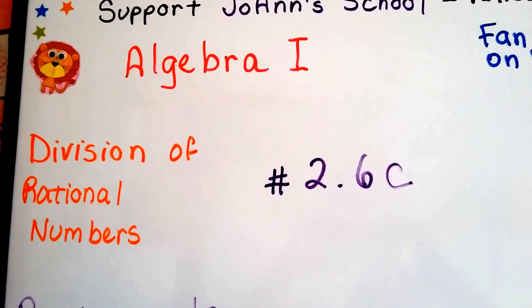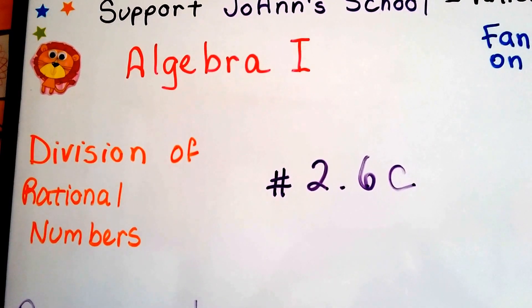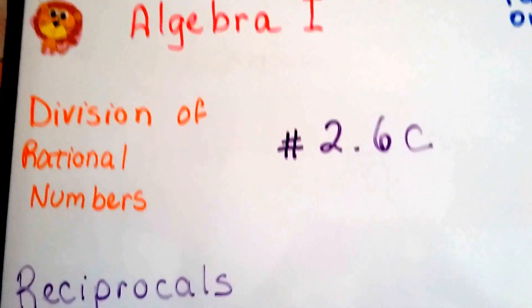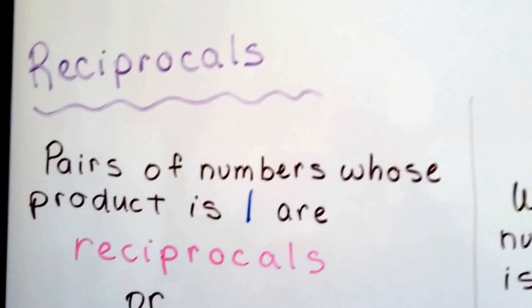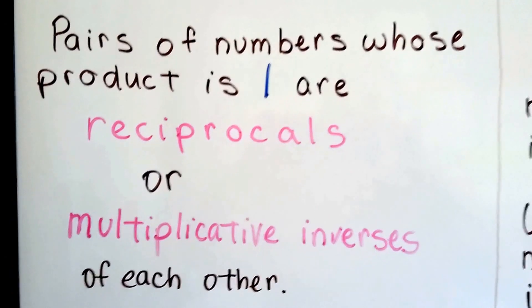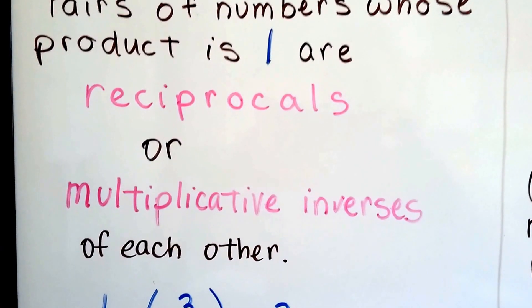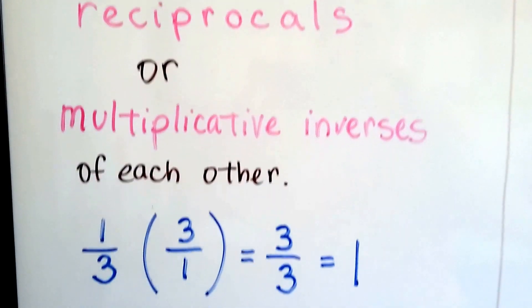We're talking about division of rational numbers in this unit. This is Algebra 1 number 2.6c. We're talking about reciprocals. Pairs of numbers whose product is 1 are reciprocals, or the multiplicative inverses of each other.